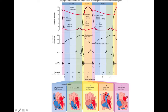This top part is looking at pressure of a couple different areas in your heart. You have pressure in the aorta, shown by this top red line, pressure in the left atria, shown by this bottom red line, and left ventricular pressure, shown by this black line.